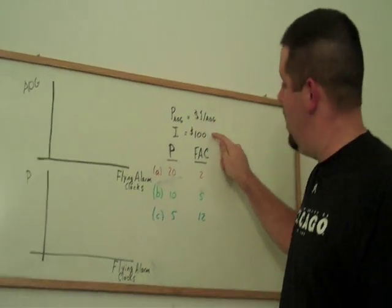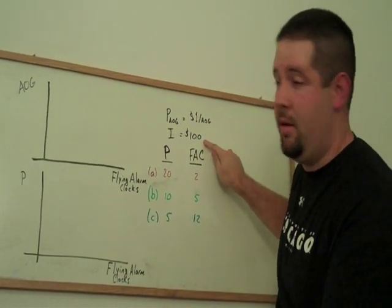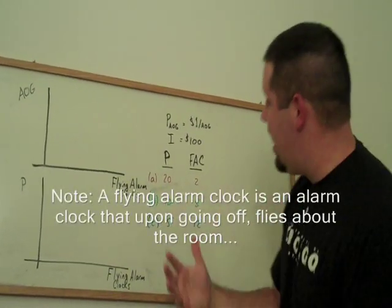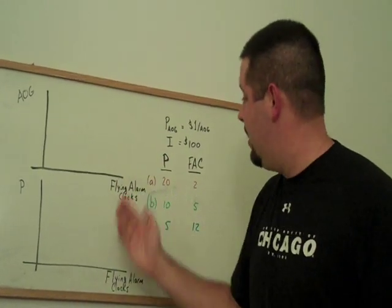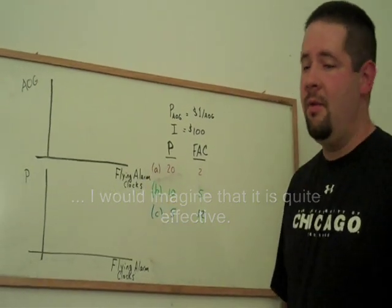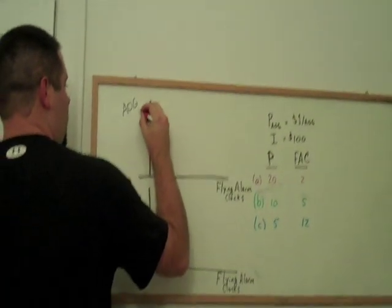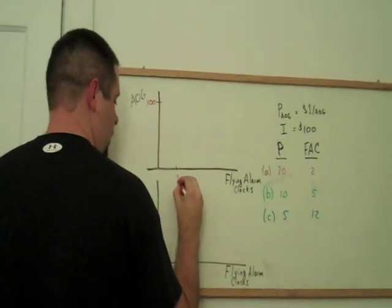In this case, each one costs $1. There are $100 available, so we can buy $100 of other goods if we spend all of our money on that. We can ask how much of the good that we're interested in can we buy? How many flying alarm clocks can we buy if we spend all of our money? Again, $20 into $100, well, that's 5. So our budget constraint for this first point connects the dot from $100 to 5.